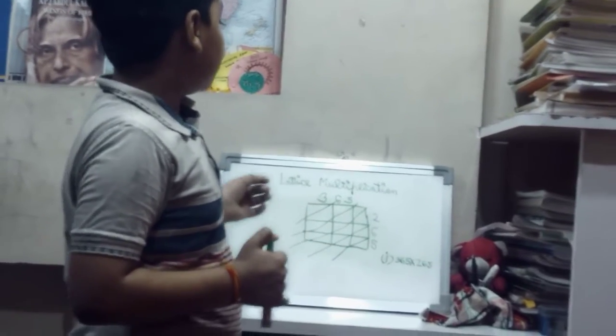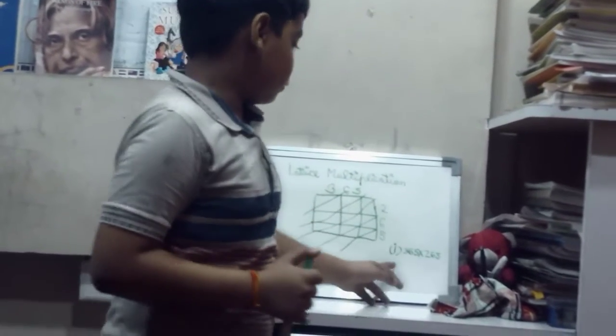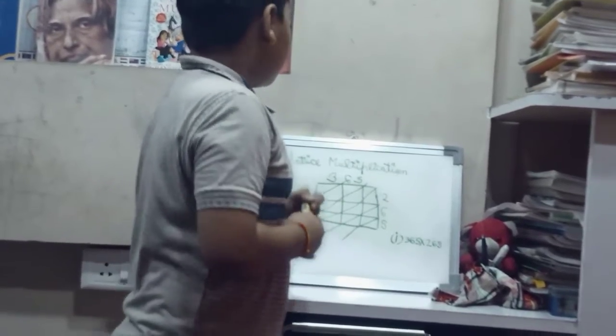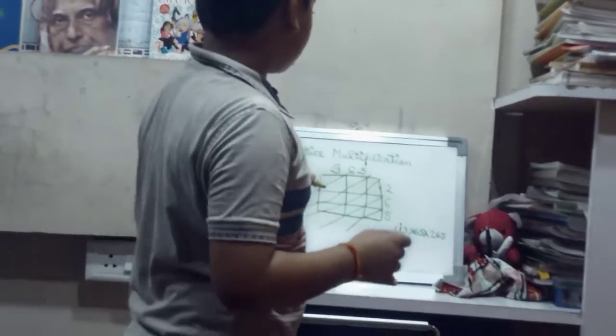into 5 parts. See, our sum is 365 into 265, so for solving this sum we have to do